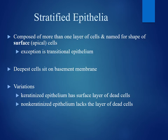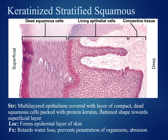Now we're going to move into stratified epithelia. These tissues are composed of more than one layer of cells. Recall that we always classify stratified tissue based on the apical surface cells, with one exception: transitional epithelium. The basal layers of these tissues sit directly on the basement membrane. We're going to have keratinized epithelium, where the apical surface is composed of dead cells, and non-keratinized epithelium, where the apical layers are living cells.